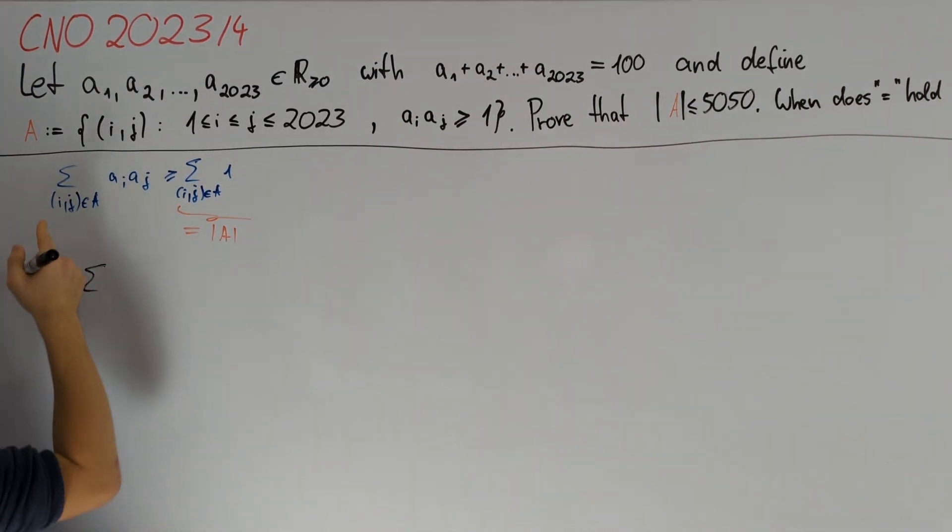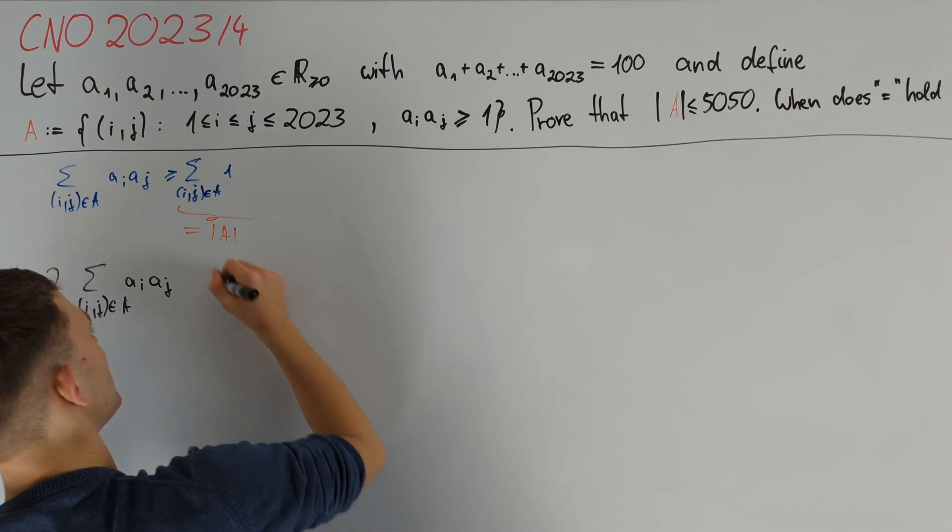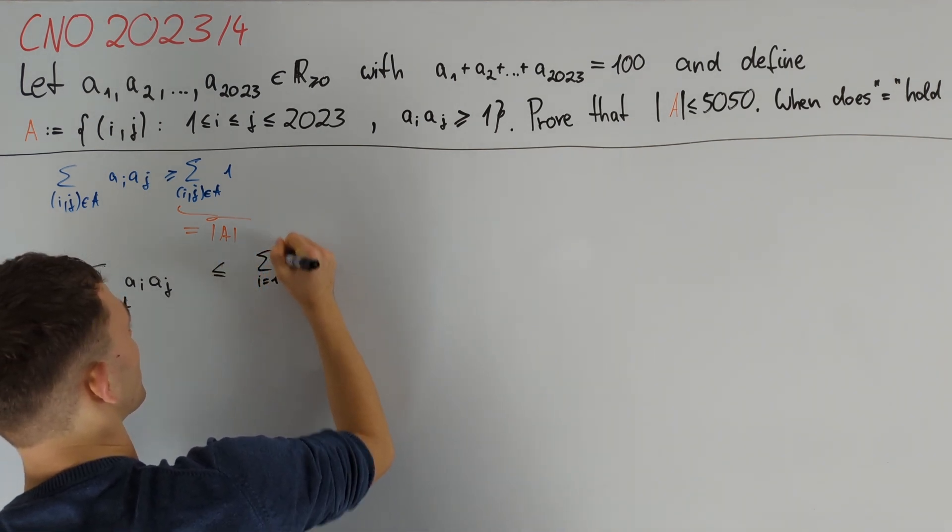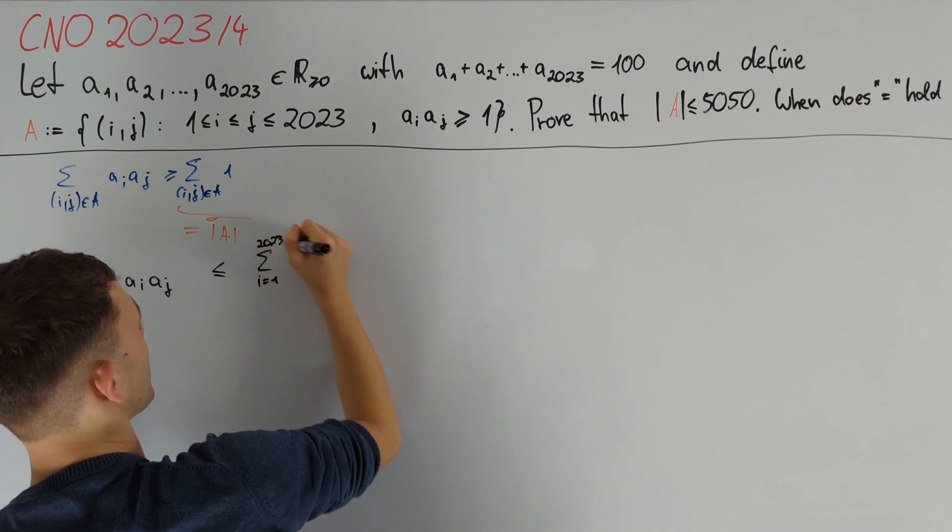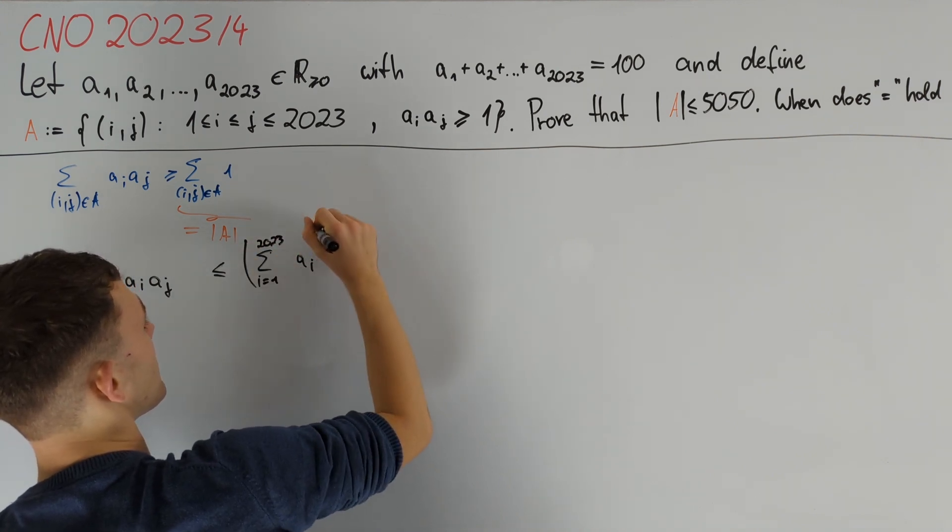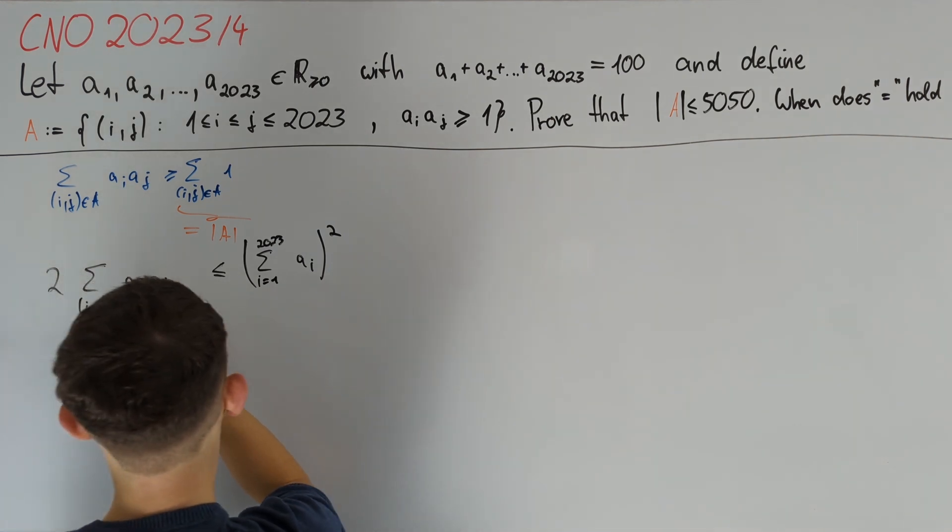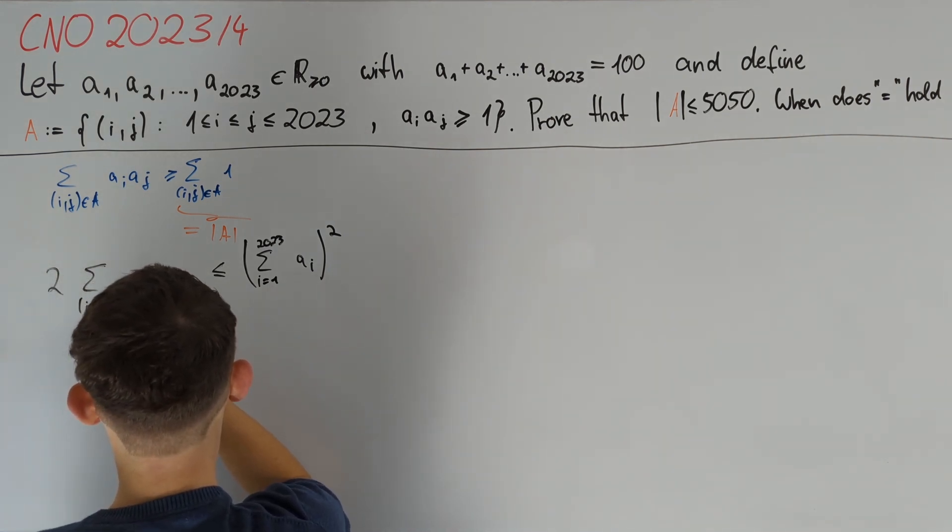We consider two times the sum of i,j in A of a_i*a_j. This is almost less than or equal to the sum of i going from 1 to 2023 of a_i squared.